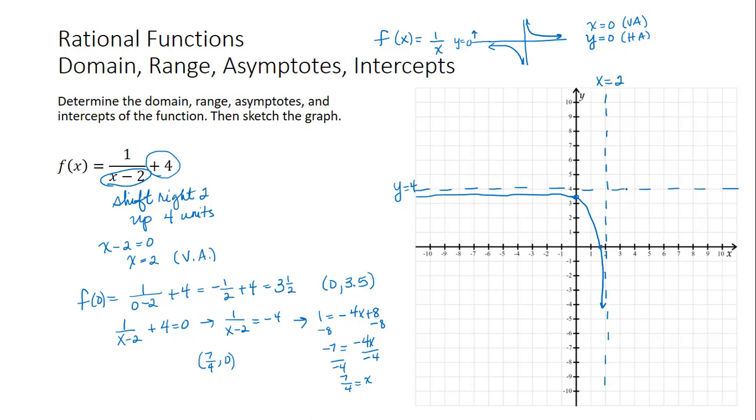If you want to figure out what a key point is, we can plug in 3 if you want to do that. So f of 3, for instance, would be 1 divided by 3 minus 2 plus 4, which is 1 over 1, or 1 plus 4, which is 5. So just to get another point on the graph, 3, 5.